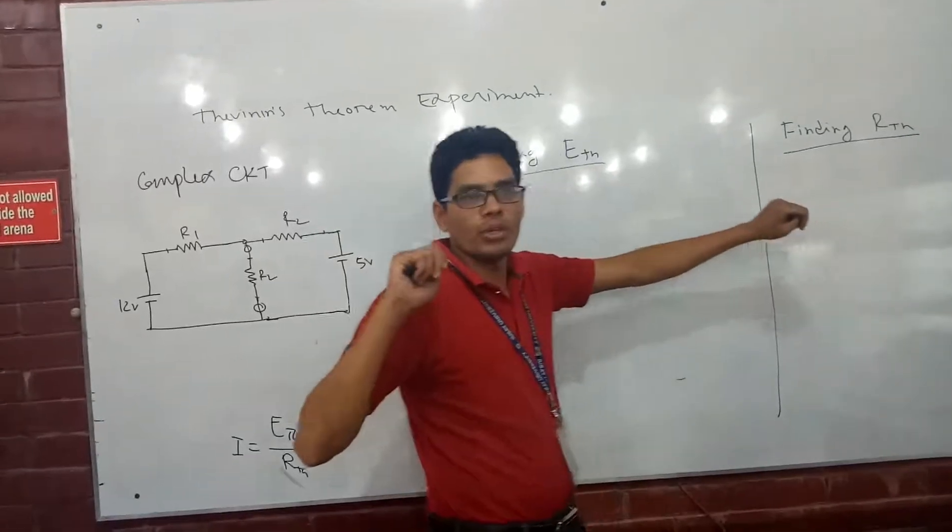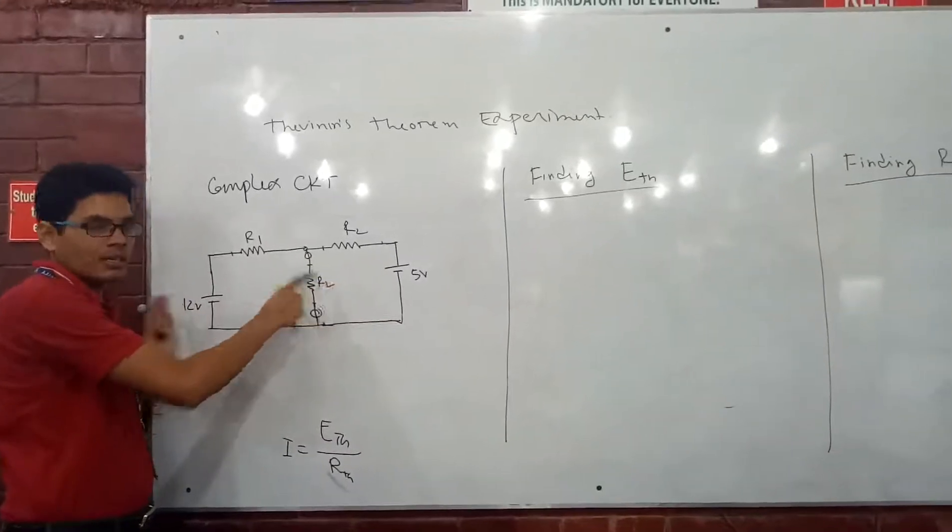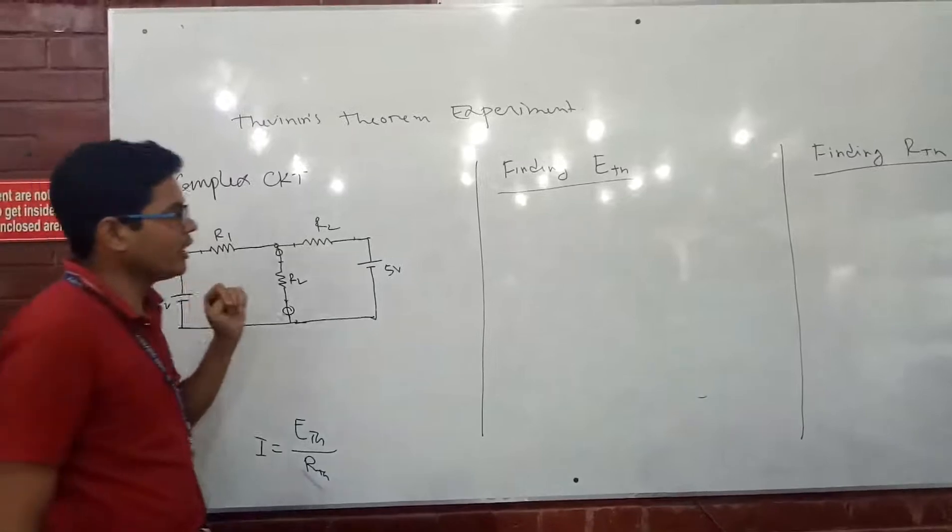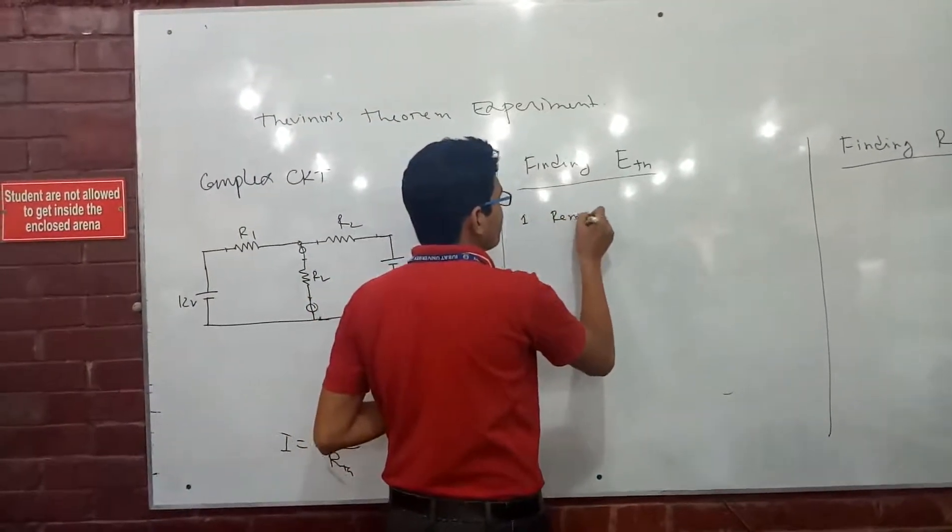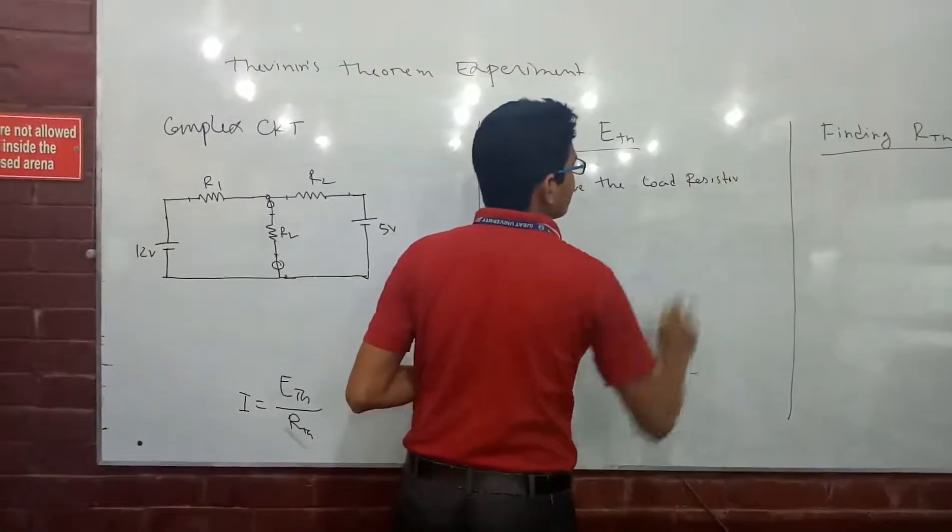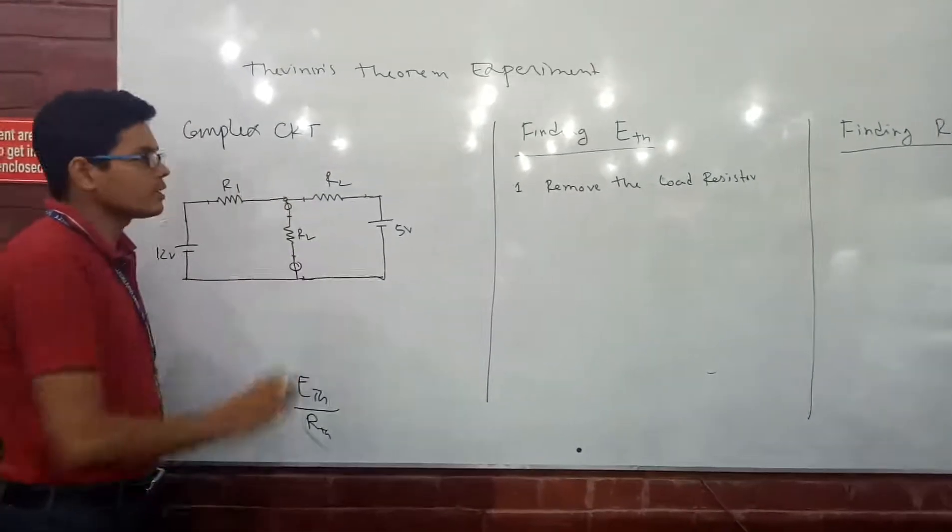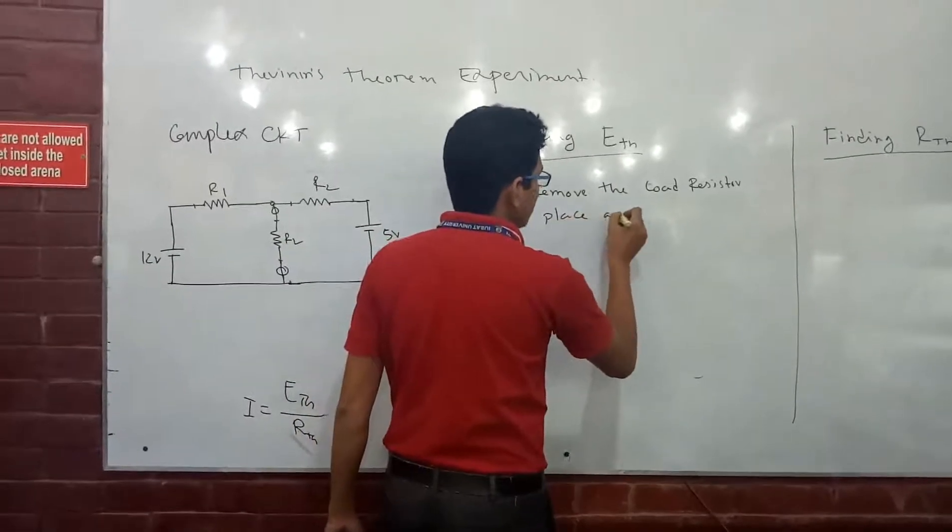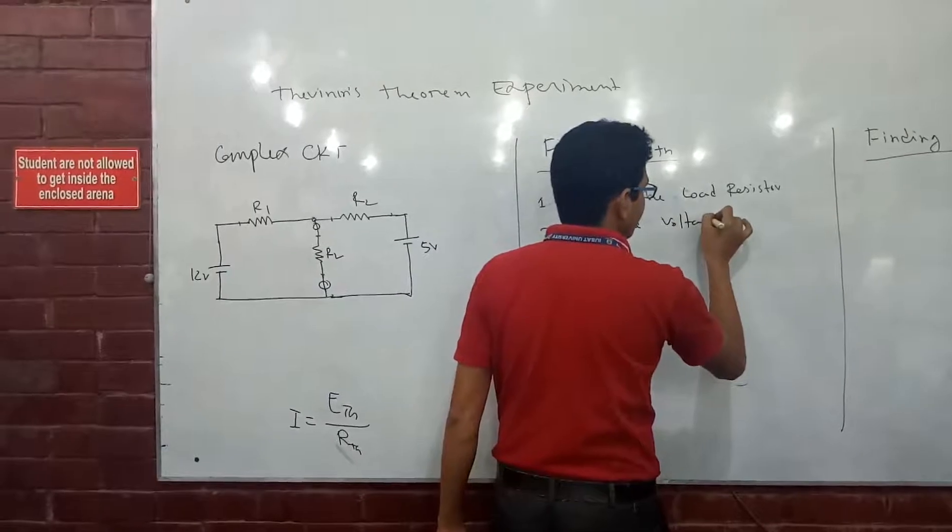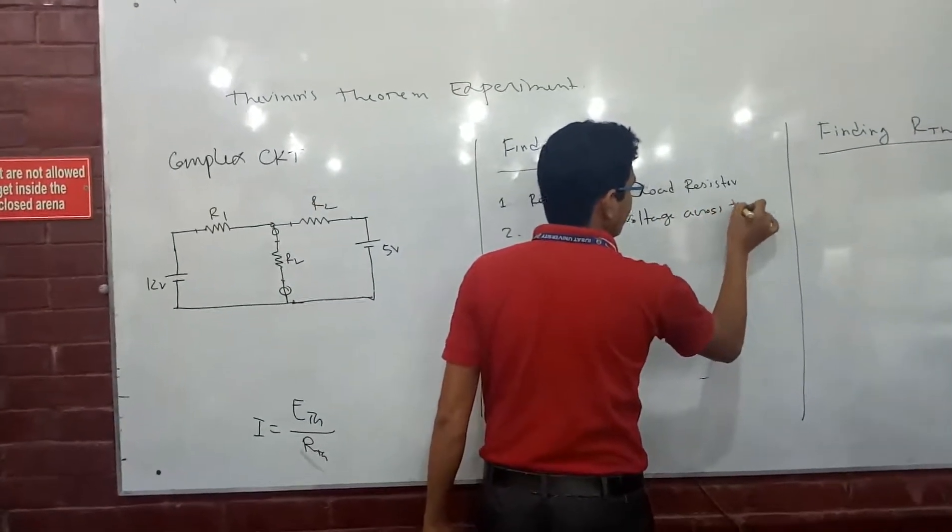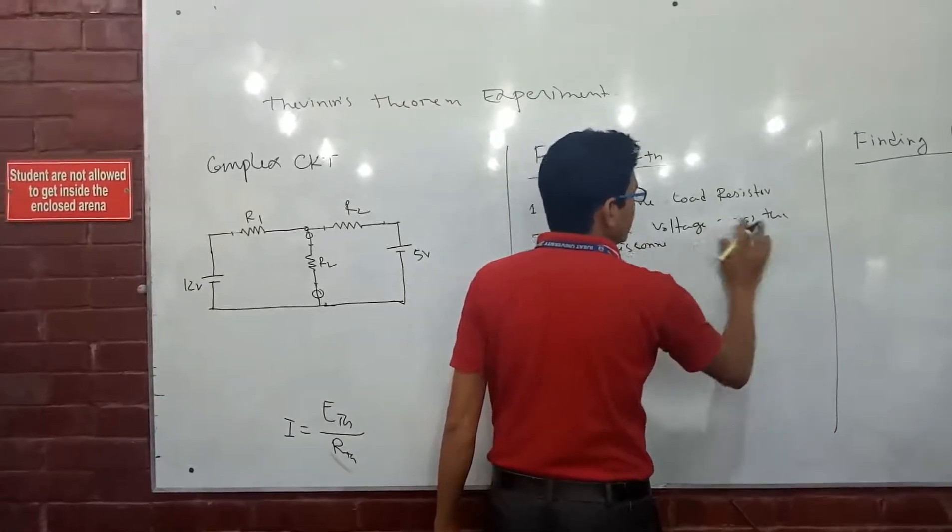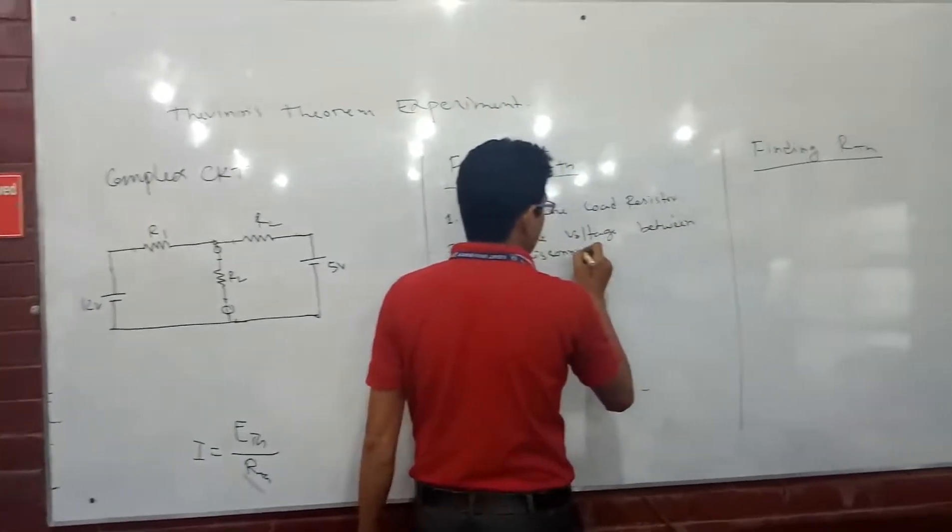And remember, we will find the Thevenin equivalence between the load. So that's our circuit. Now we'll apply the Thevenin concept in that circuit. So the first step, we'll find ETH from that circuit. For that, the job is: remove the load resistance. That means the first job, you have to remove the load resistance, and then measure voltage across the disconnection, between the disconnected terminals where RL was.